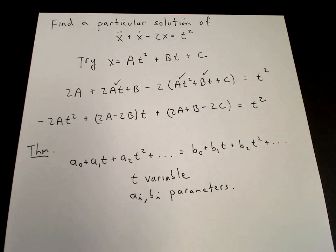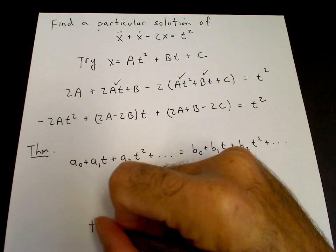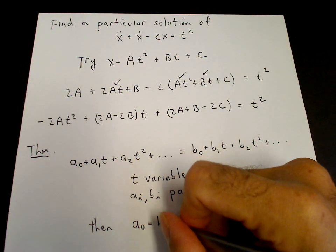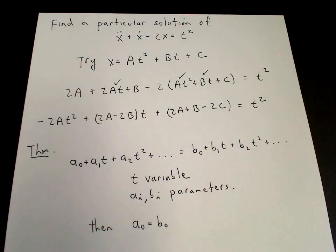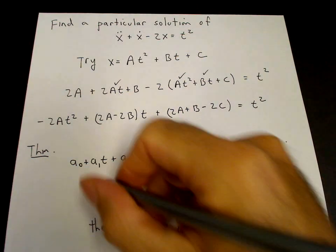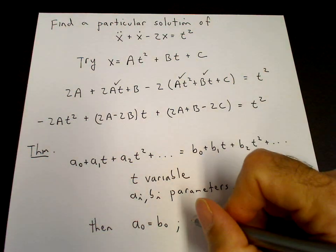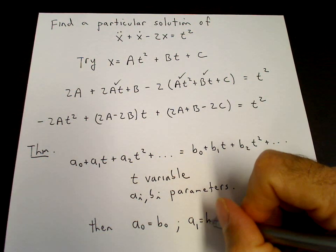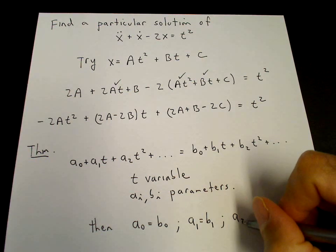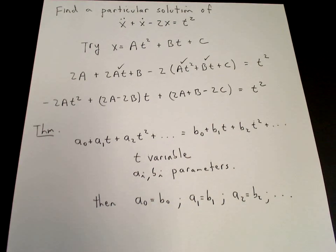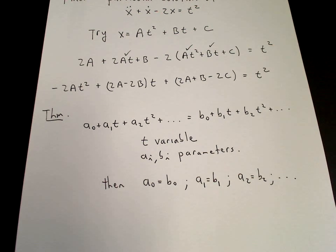If we take the derivative with respect to t, and substitute in t equals zero, then we get a1 equals b1. The second derivative tells us a2 equals b2, and so on. So the coefficients are the same on the left-hand side and on the right-hand side.